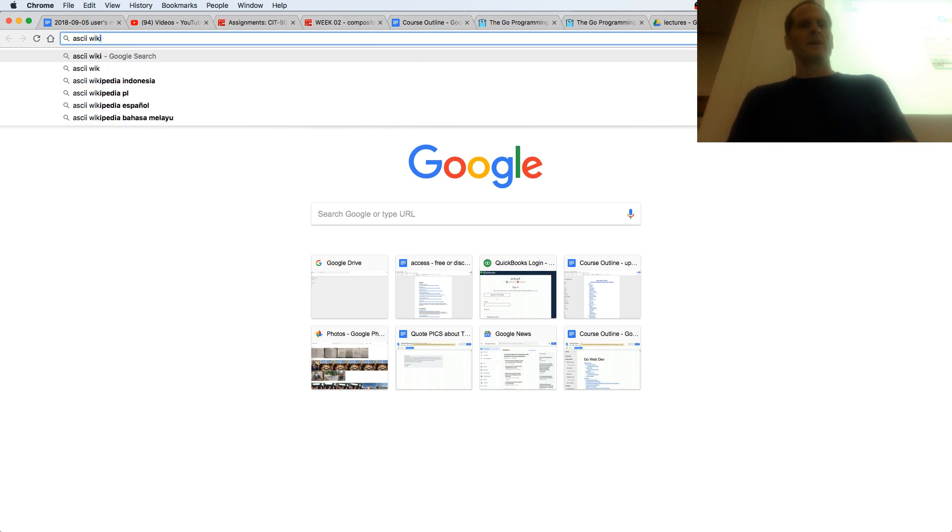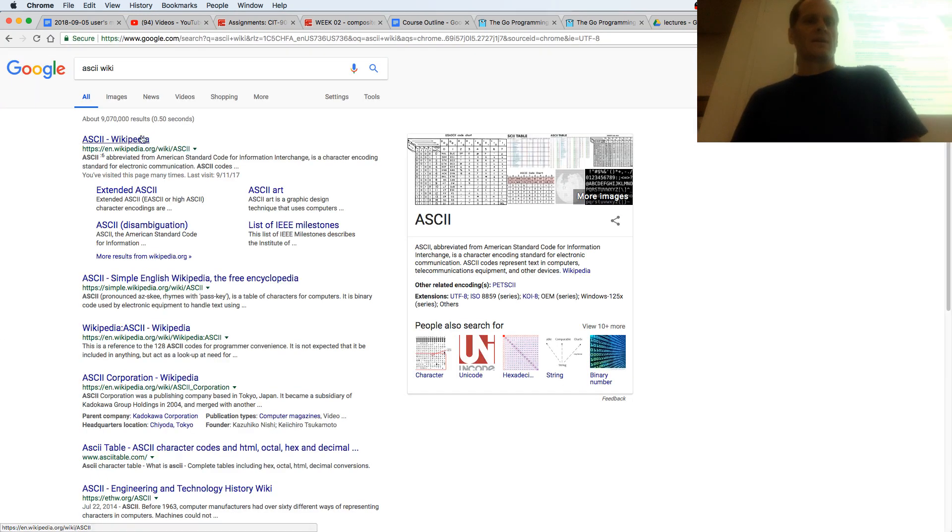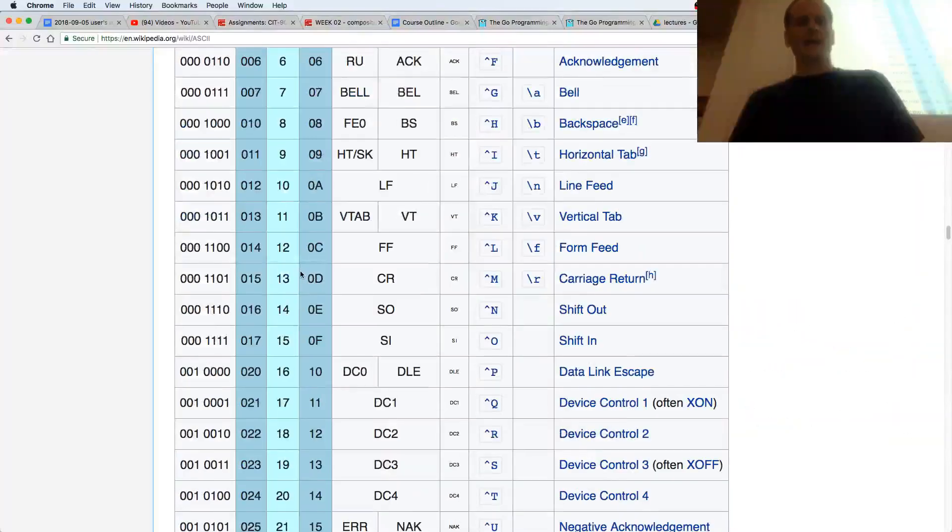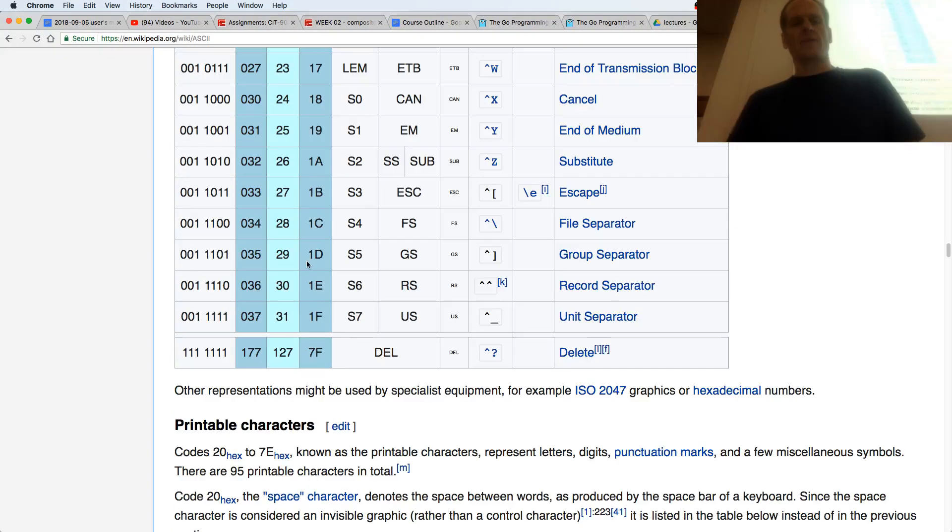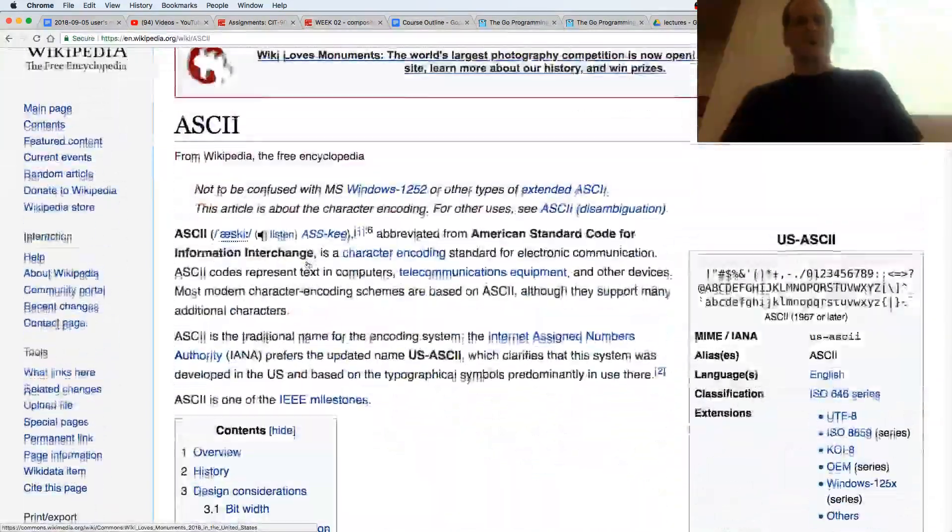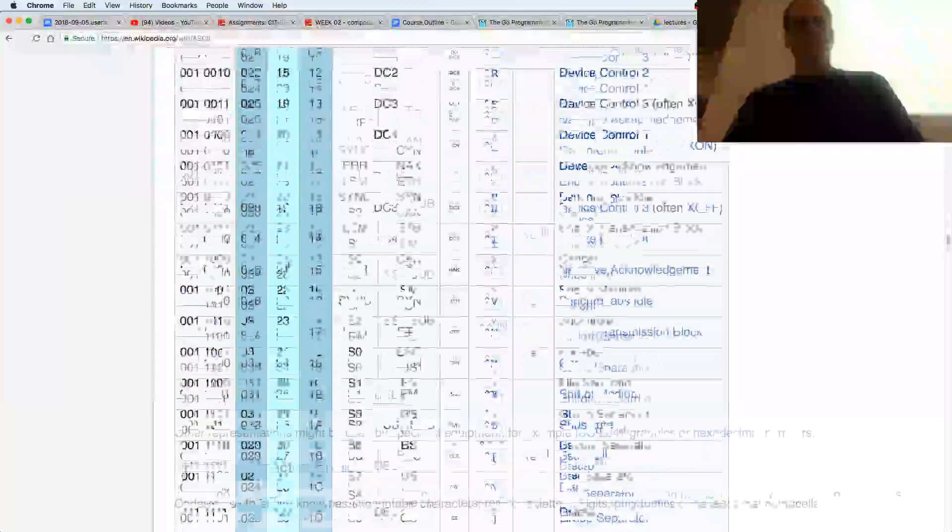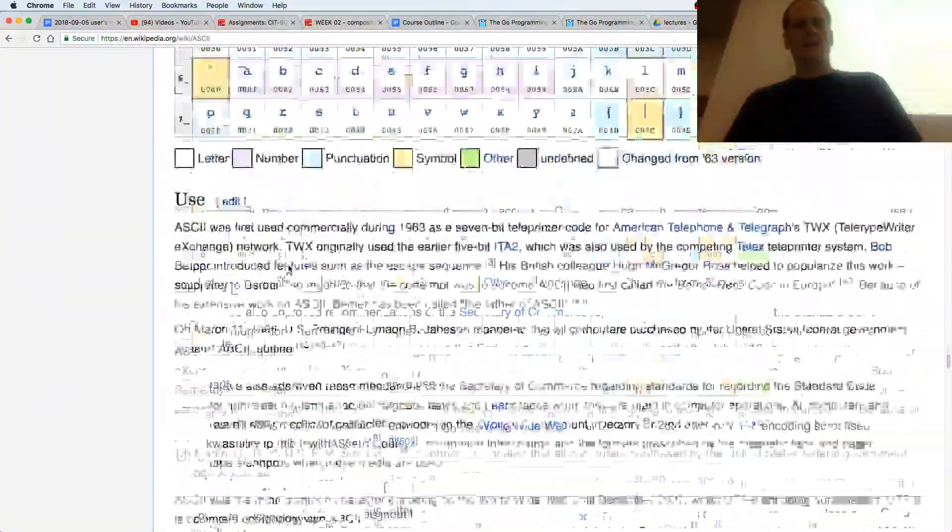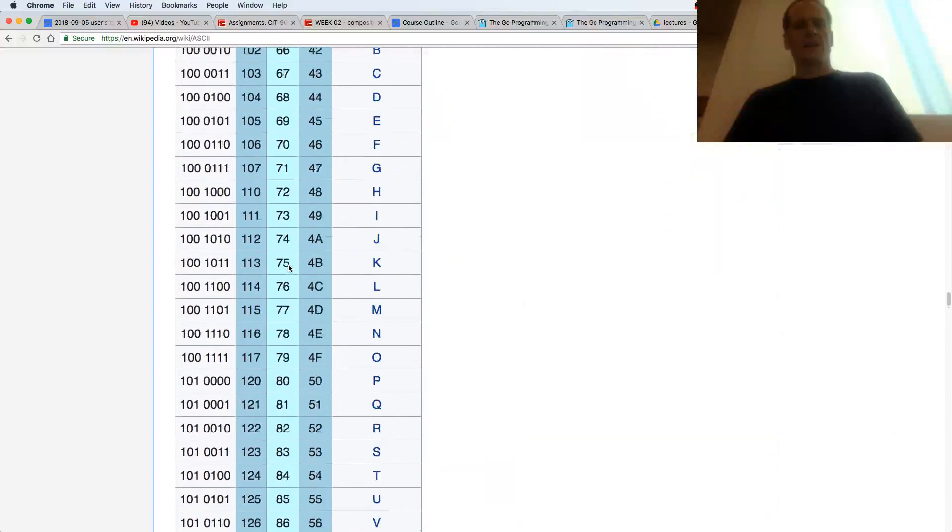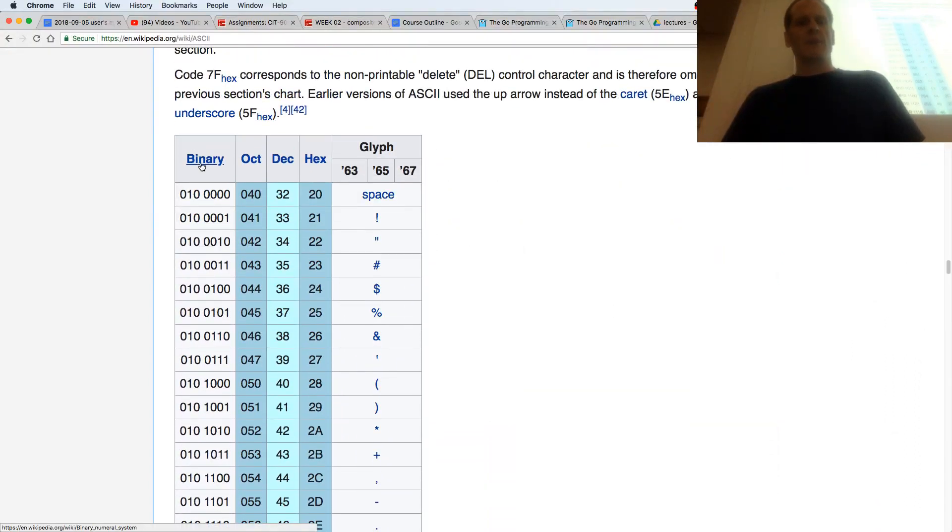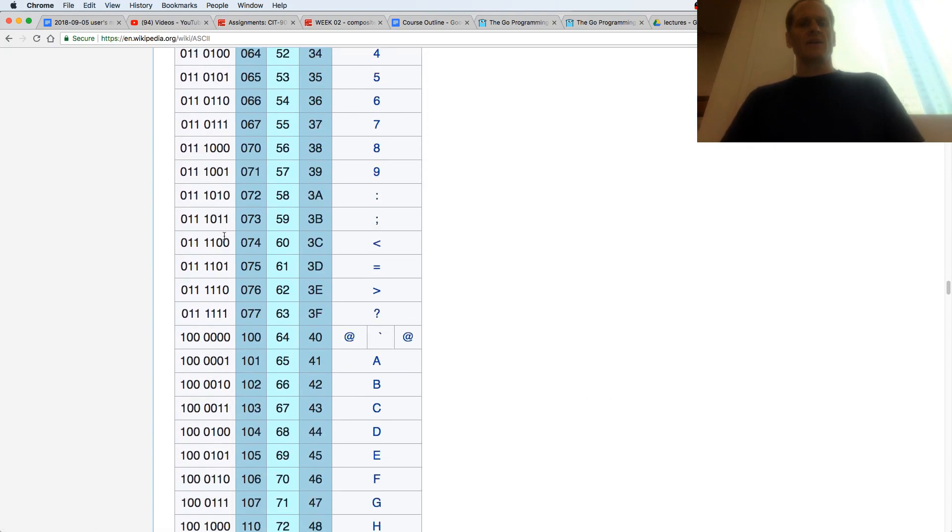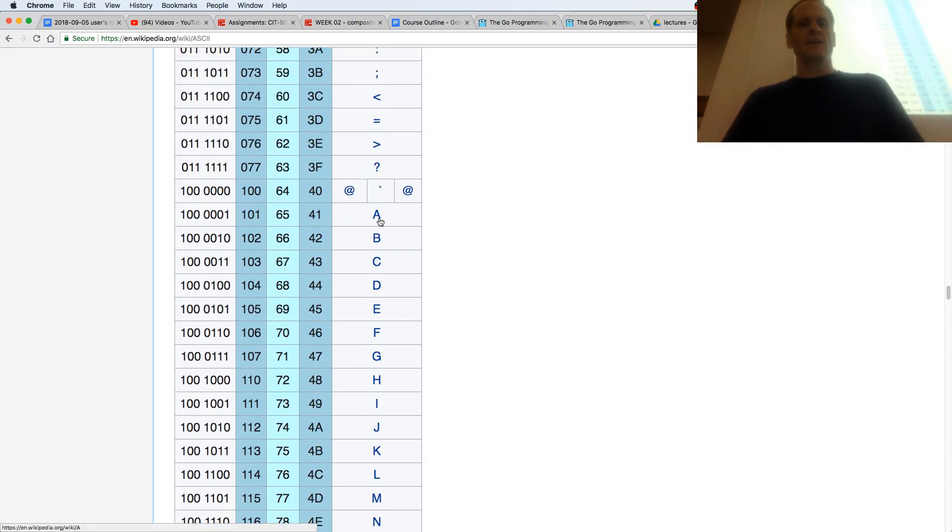So we can look up ASCII Wiki. So here on Wikipedia, here's ASCII, one of the original American Standard. What's it stand for? American Standard Code for Information Interchange, whatever.